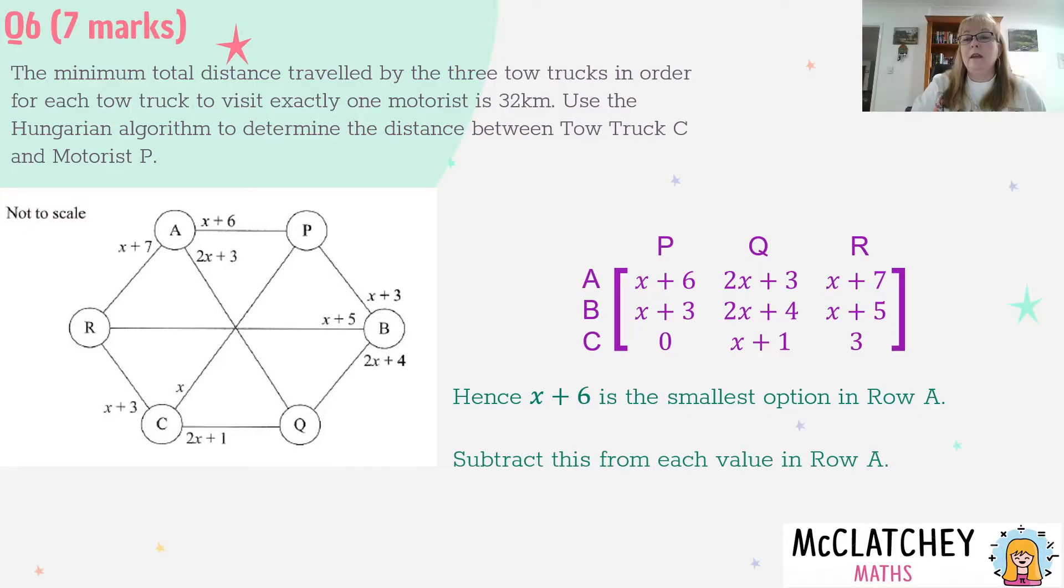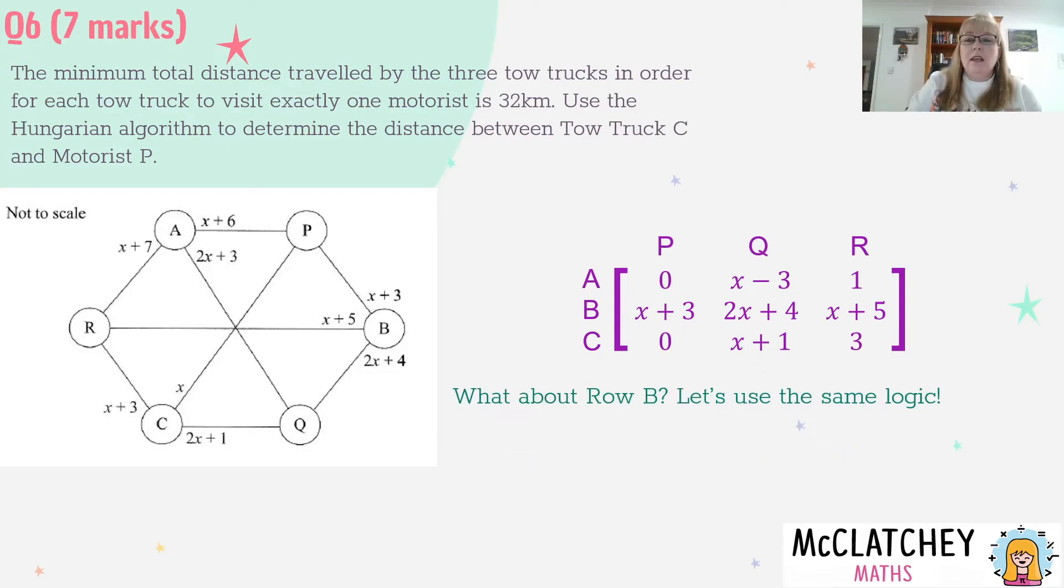So now knowing that knowledge we're going to subtract X plus 6 from everything in row A. X plus 6 take away X plus 6 will be 0. 2X take away X is just 1X, plus 3 take away 6 is minus 3, so I'll have X minus 3. And X plus 7 take away X plus 6 leaves just 1. If we follow the same logic for row B and set that equal to 32, X will be at minimum 5, which means 5 plus 3 is 8, 10 plus 4 is 14. That means X plus 3 has got to be the smallest value in that row.